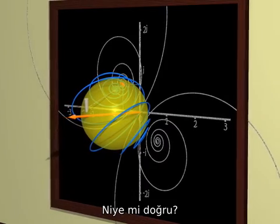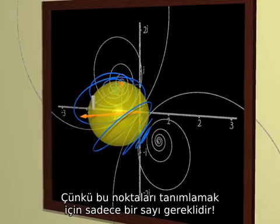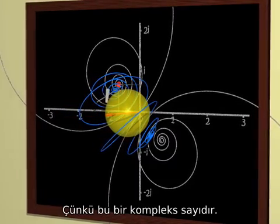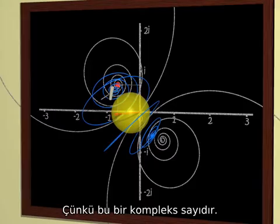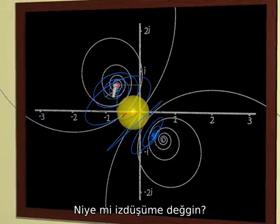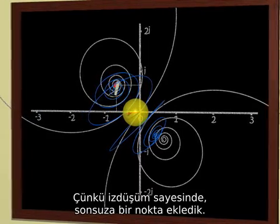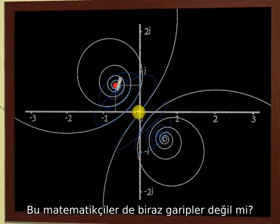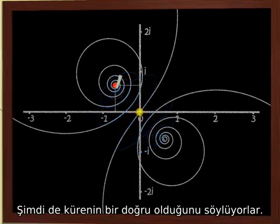Therefore, mathematicians say that the sphere is a complex projective line. Why line? Because one needs only one number to describe its points. Why complex? Because this number is complex. Why projective? Because we added a point at infinity using the projection. Aren't mathematicians strange when they try to tell us that the sphere is a straight line?